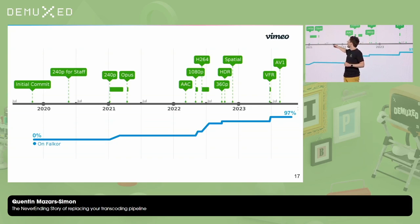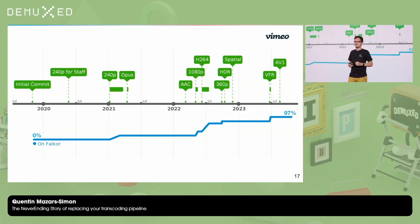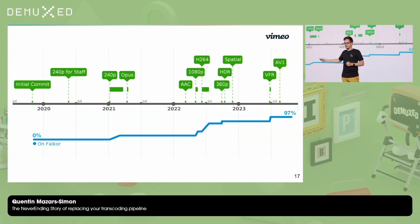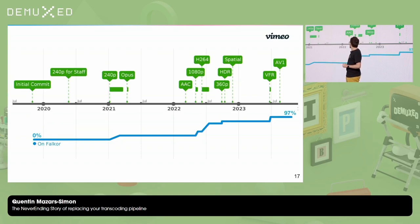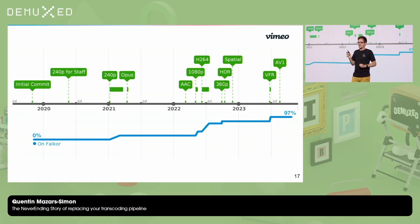That took about three months, from January to March 2021. Going from 0 to 1% was fine, but from 1% to 10% is when you start seeing issues — back and forth of trying 10%, seeing if it's going fine or not. Then we quickly added Opus audio. But then nothing happened release-wise until around March 2022. For about a year, we were paying off technical debt behind the scenes.